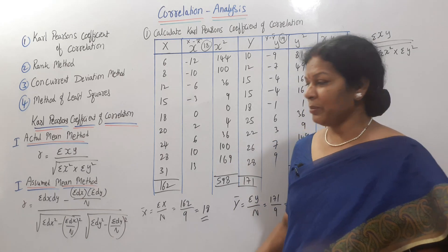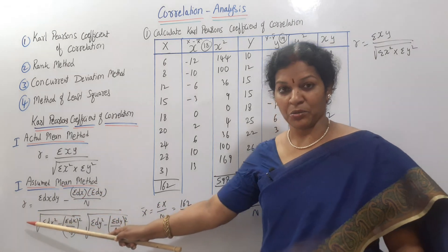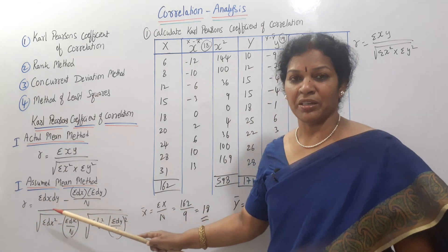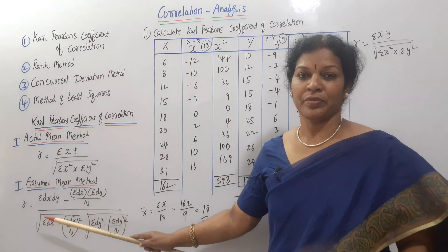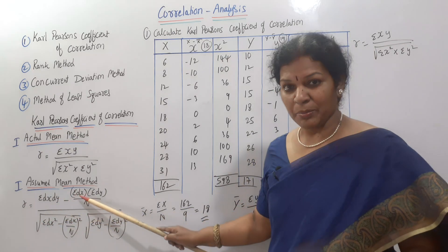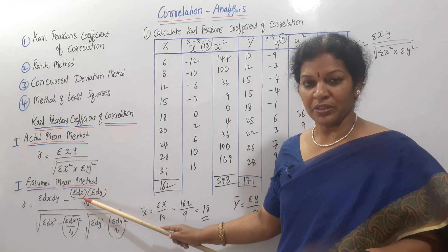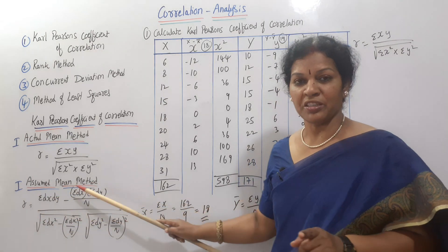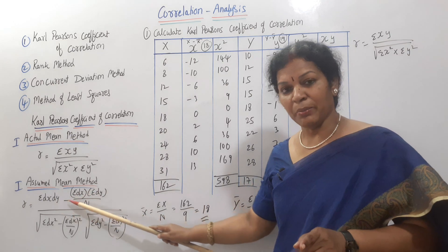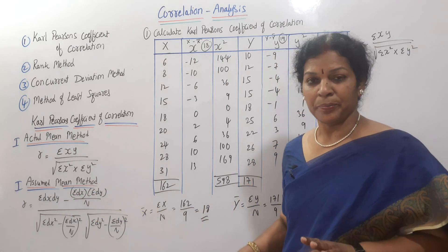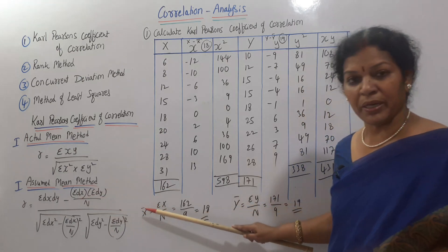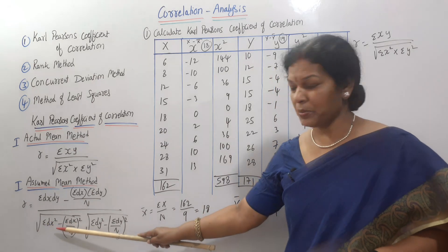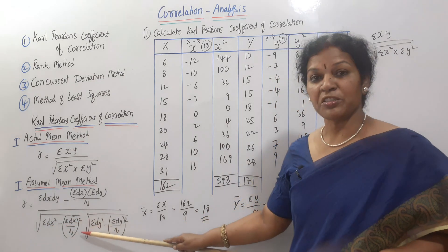For the assumed mean method, the formula uses sigma dx dy. r is equal to: sigma dx dy minus sigma dx times sigma dy divided by n, all divided by the square root of sigma dx squared minus sigma dx by n whole squared.